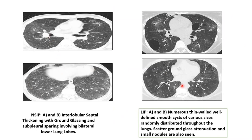Next is lymphoid interstitial pneumonia. There will be diffuse T-cell infiltration. On HRCT, we can see thickening of bronchovascular bundles along with interstitial thickening and pulmonary nodules. We can see thin-walled cysts with ground glass opacity. In this set of images showing lymphoid interstitial pneumonia, we can see numerous thin-walled, well-defined cysts which are randomly distributed, and there is also presence of ground glass opacity with nodules.